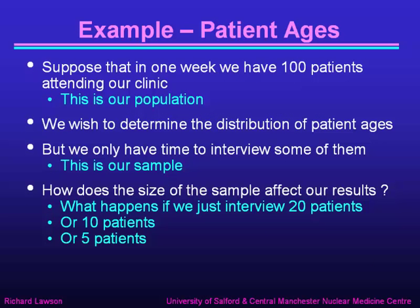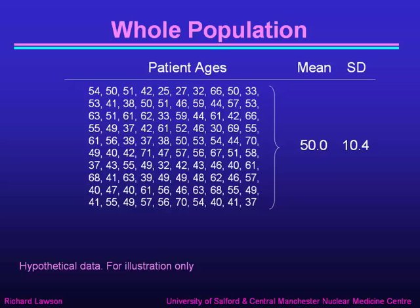Let's take an example looking at patient ages. Suppose that in one week we have 100 patients attending our clinic — that's our population. We wish to determine the distribution of patient ages, but we've only time to interview some of them — that's our sample. Here are the ages of all 100 patients. The average works out to exactly 50.0, and the standard deviation is 10.4.